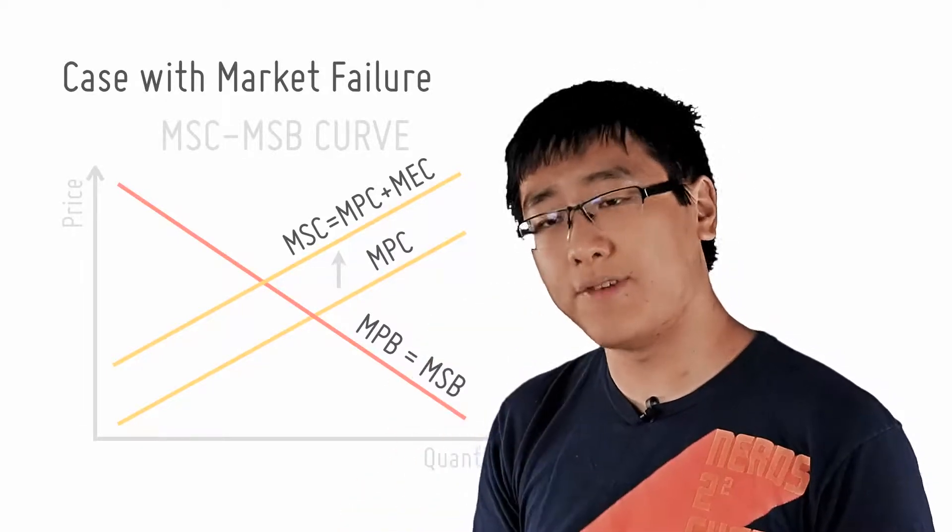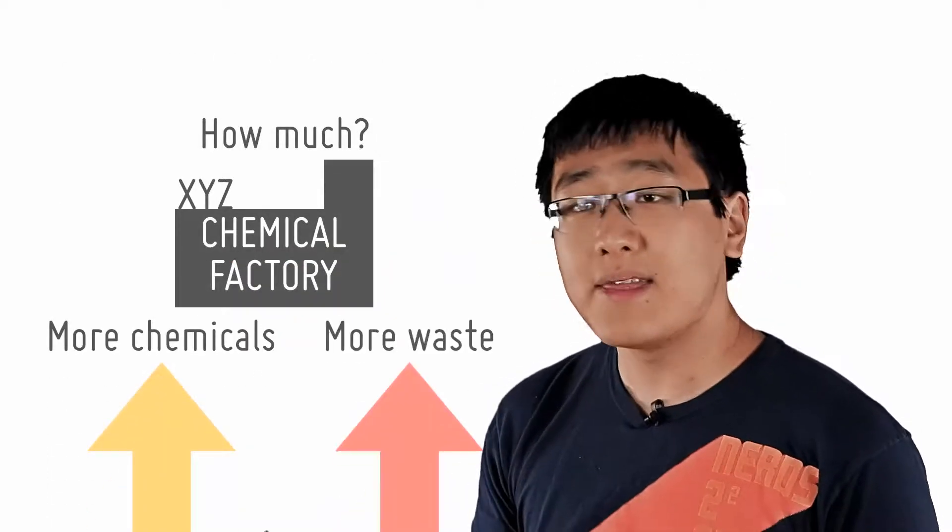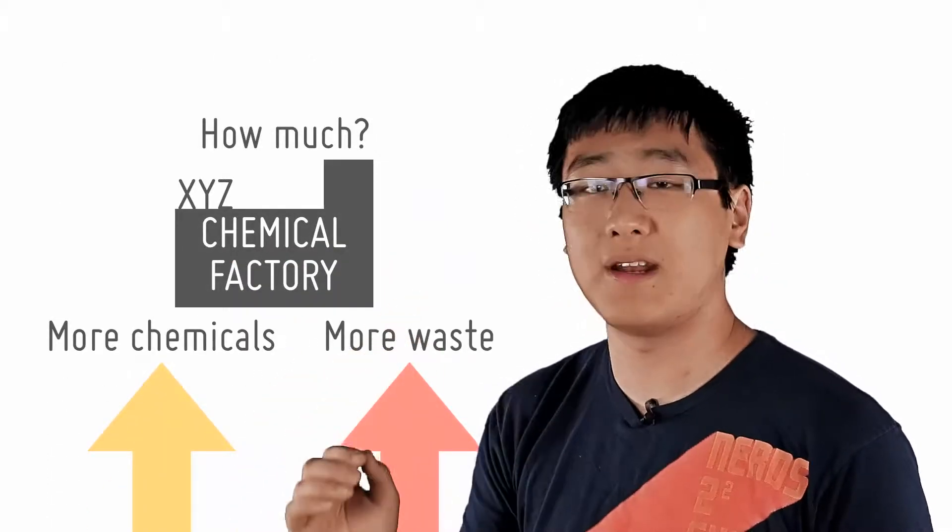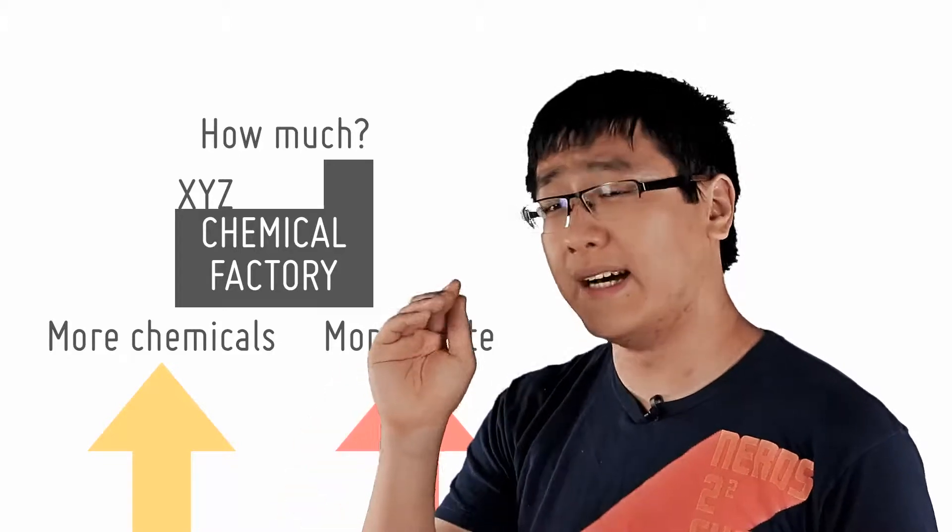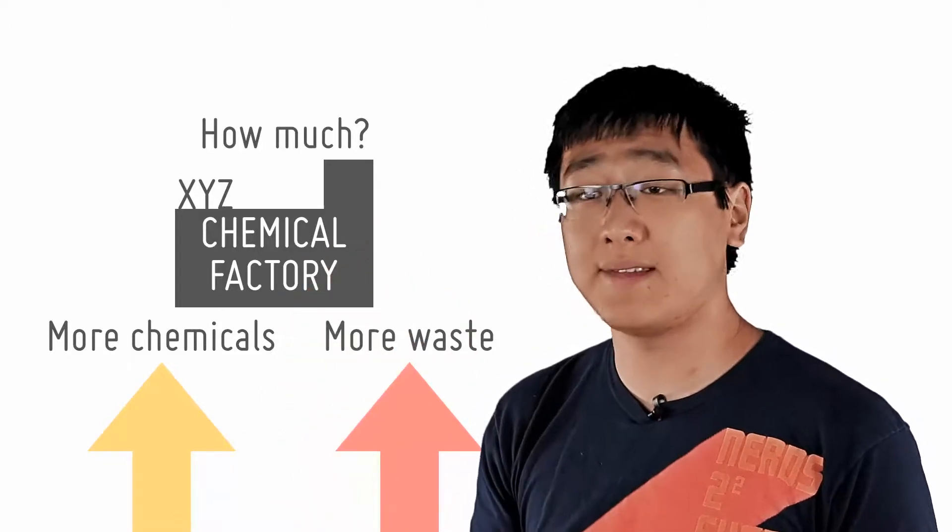Now, let's assume that the firm is selfish. Why should it not be? It is selfish and it only seeks profits. Then it wouldn't give two hoots about what the fisherman is doing downstream. It only cares about earning profits and lots of profits. So, in other words, it is profit maximizing.